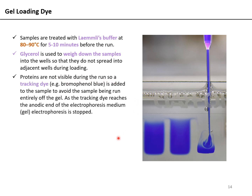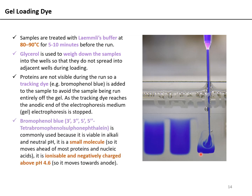Proteins are not visible during the run, so a tracking dye is added. Bromophenol blue is most commonly used — it gives the sample its blue color so you can track how far the sample has migrated and know when to stop the gel. It is visible in alkaline and neutral pH, it is a small molecule so it moves ahead of most proteins forming a dye front, and it is ionizable and negatively charged above pH 4.6, ensuring it migrates towards the anode.